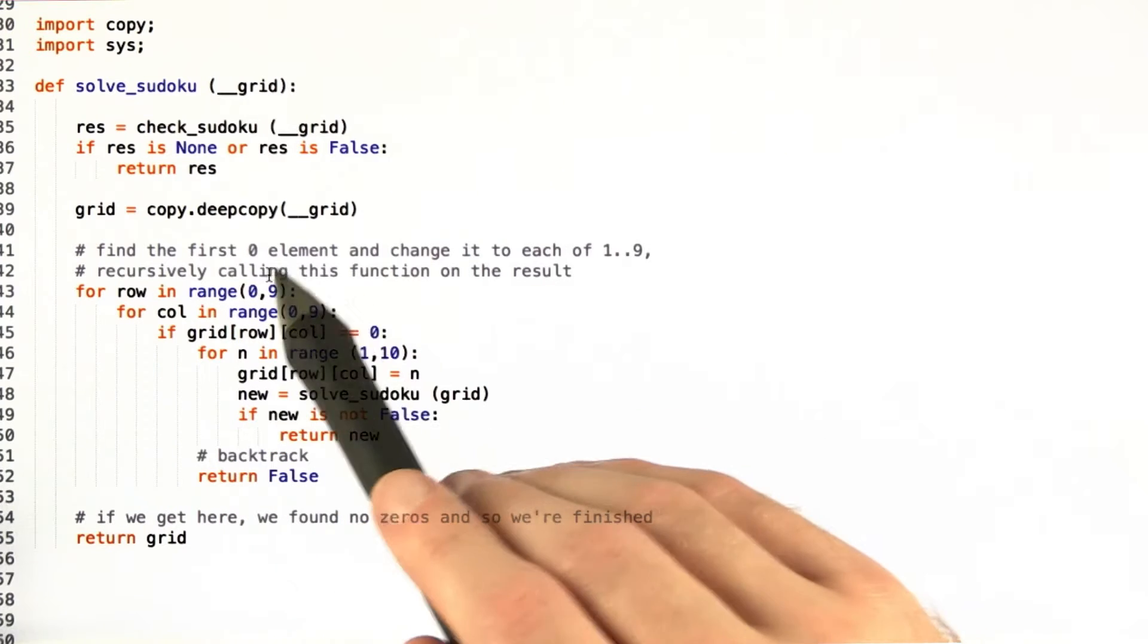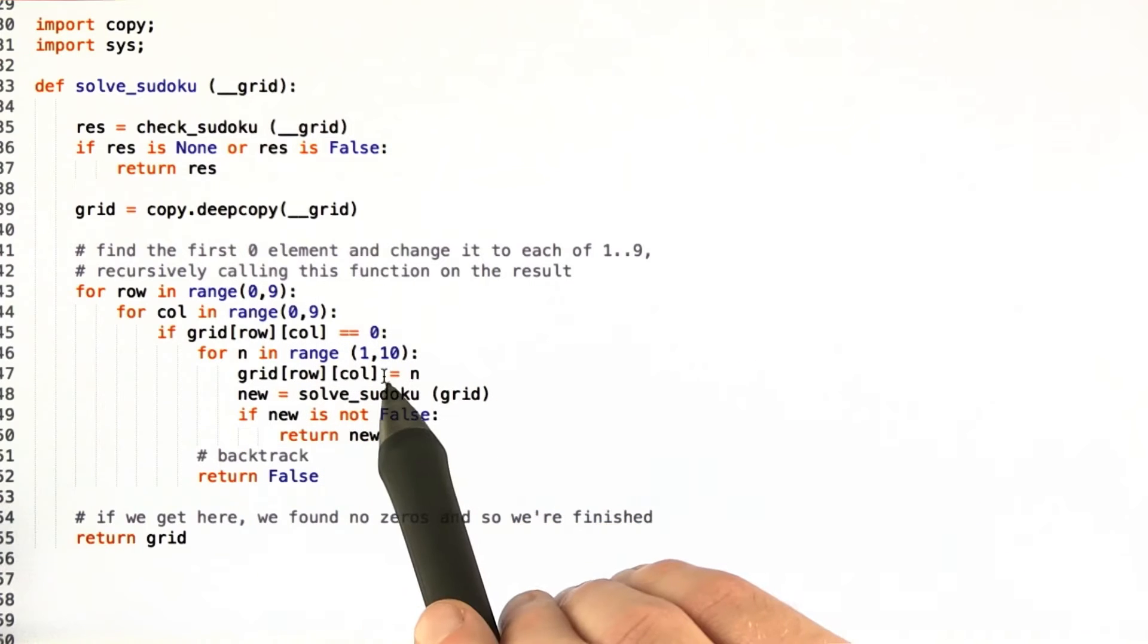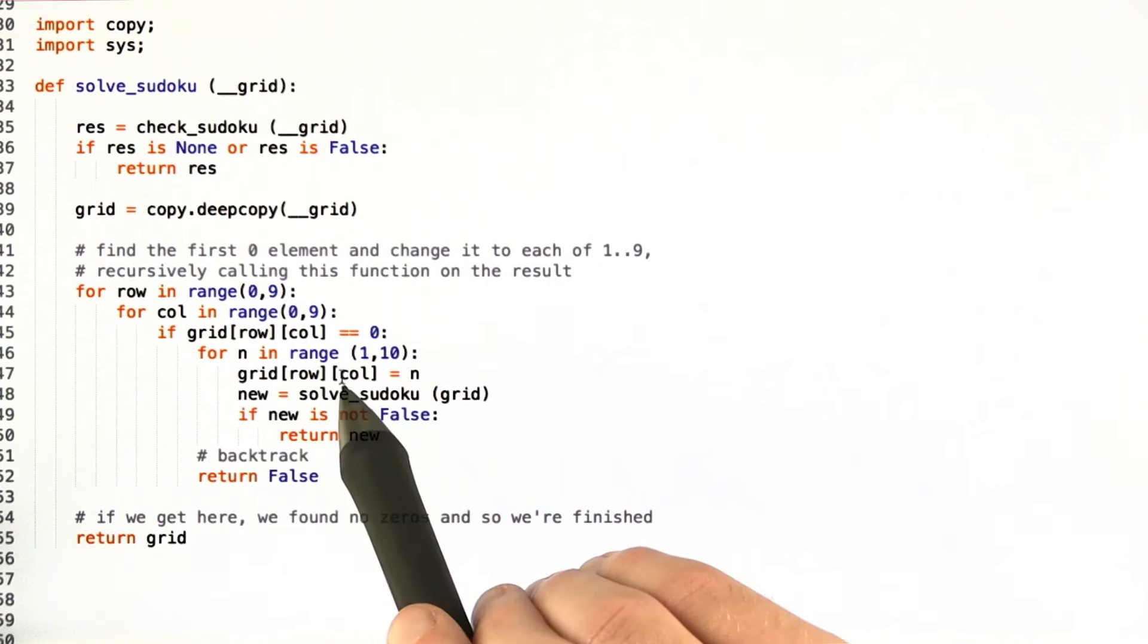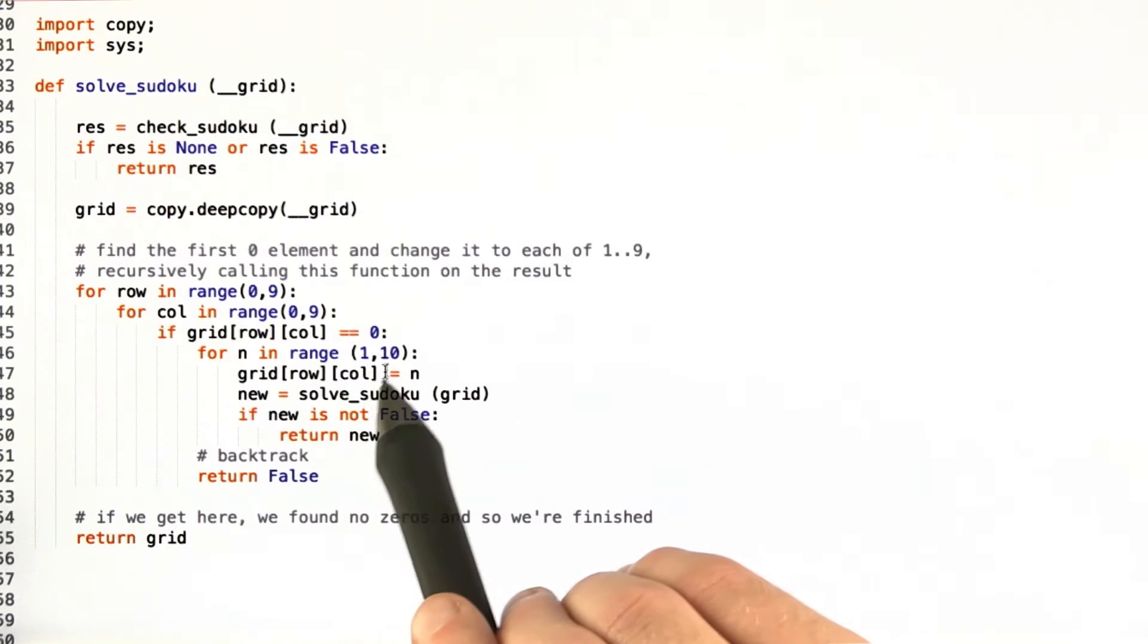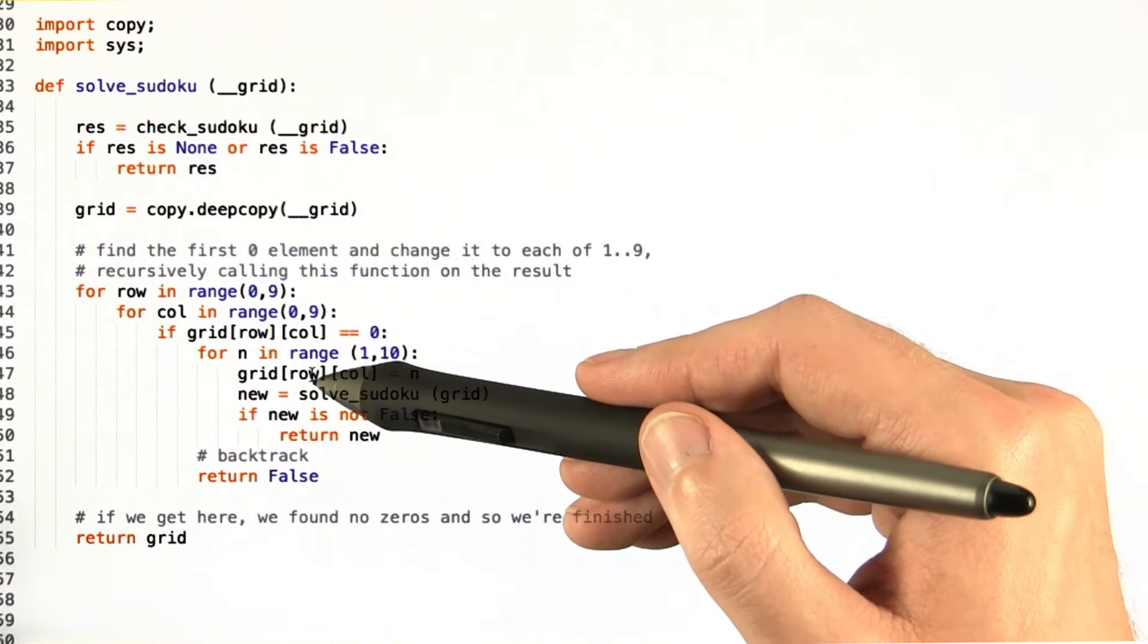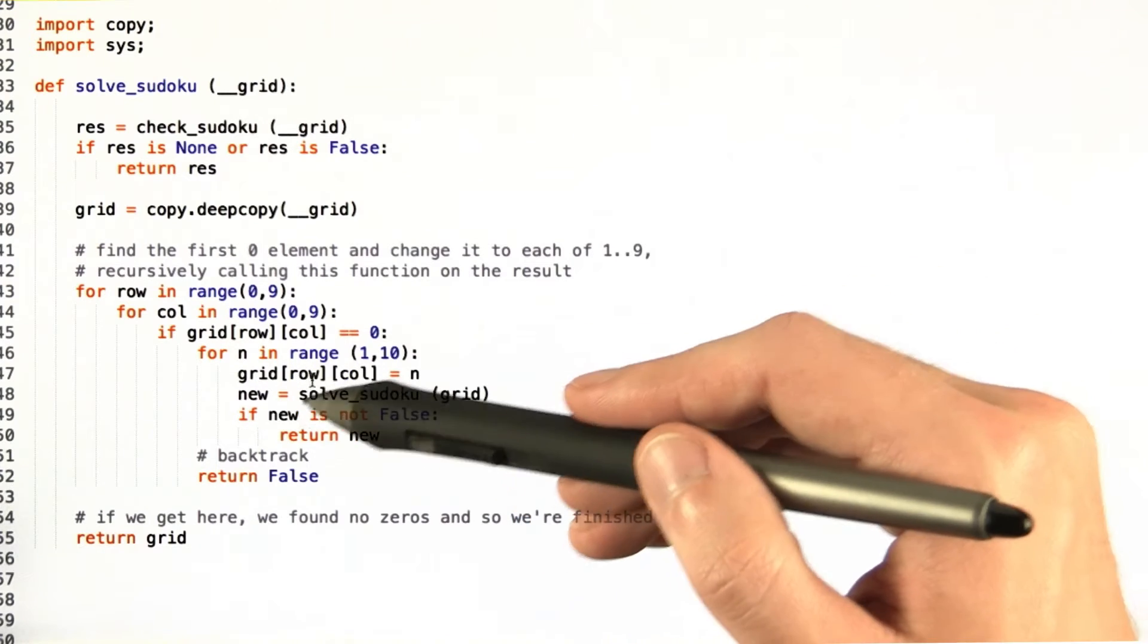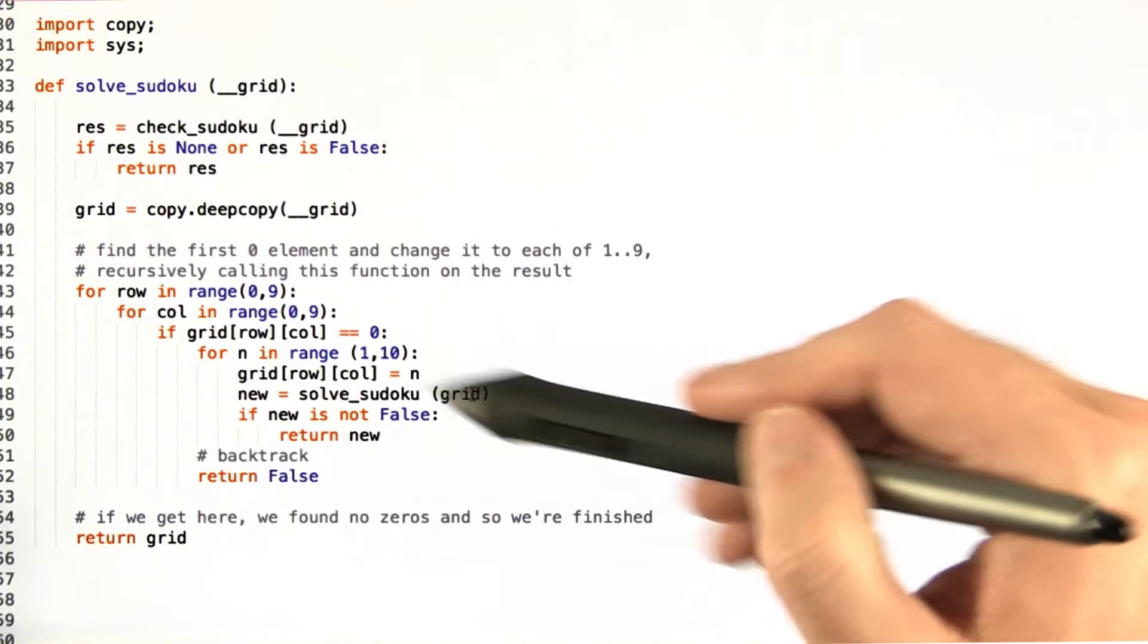So for each element in the grid we check if it's zero and then for all n in the range one through ten, so all elements one through nine, then we set that grid position to that number and then we call solve sudoku again.